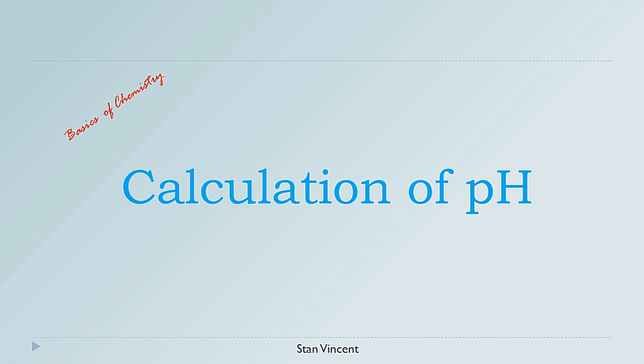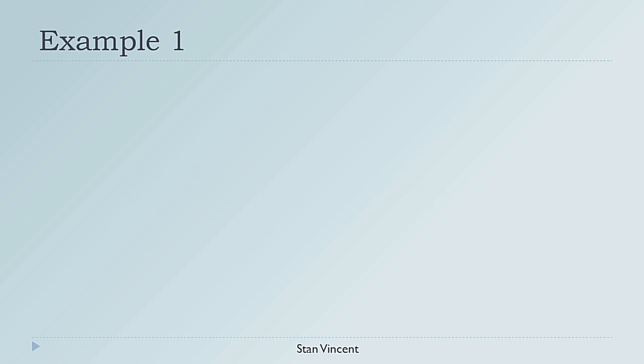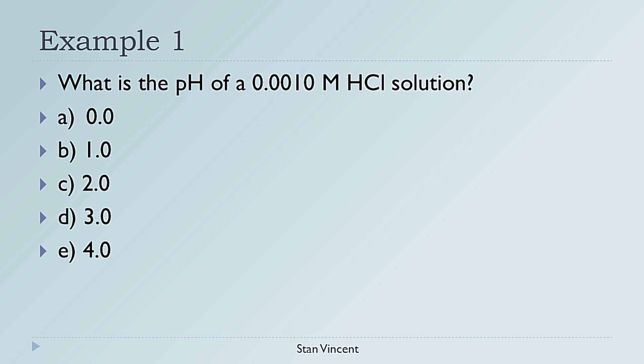In this video you will see problems related to pH and pOH of acidic and basic solutions. Example 1: What is the pH of a 0.001 molar solution of hydrochloric acid? Pause the video, solve the problem, and pick the best answer from the choices given.